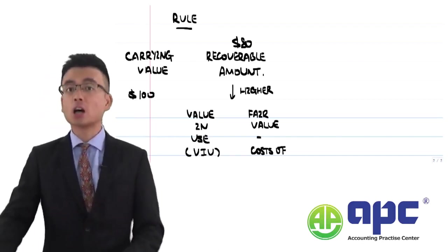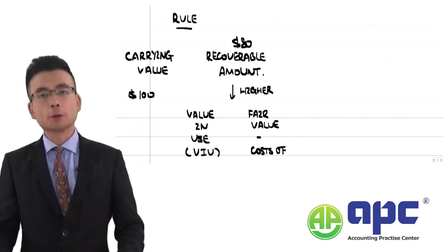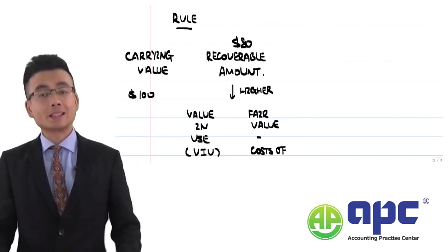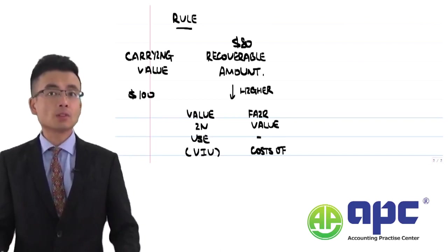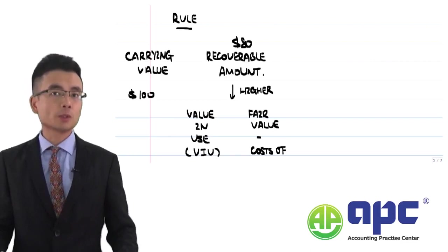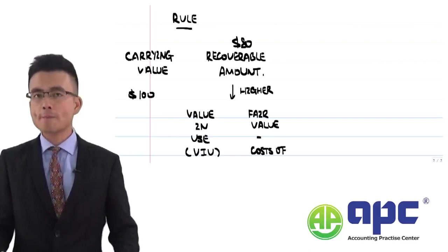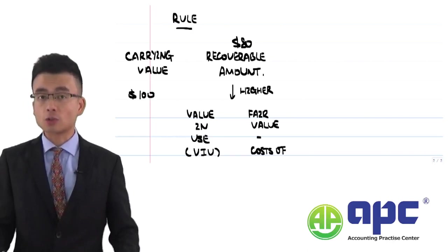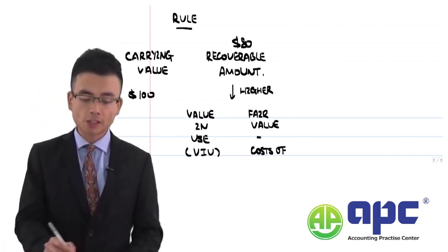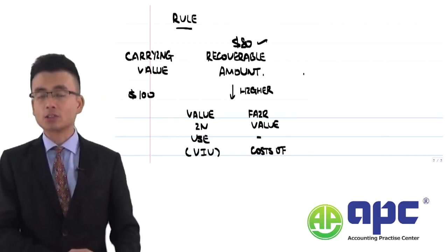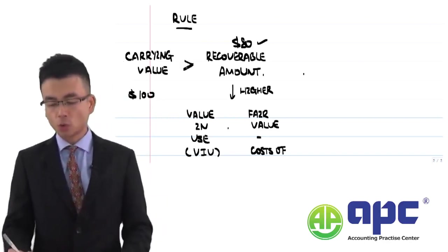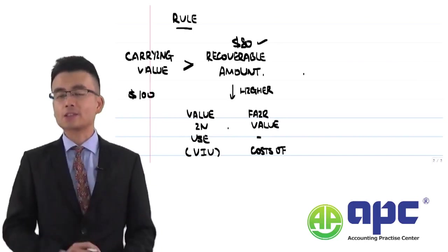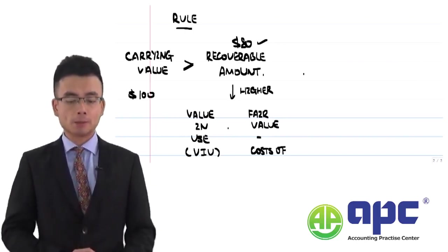In this case, the asset carries $100. Under the going concern assumption in the conceptual framework, we should recover at least $100 back, since we've spent that money buying the property, plant and equipment or intangibles. But we can only recover $80. Therefore, there should be an impairment loss of $20, because $100 minus $80 equals $20. That's the basic rule about the impairment of assets.